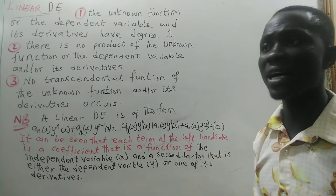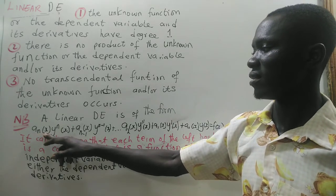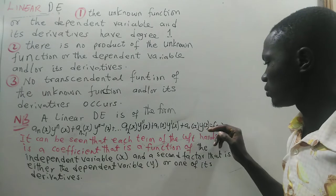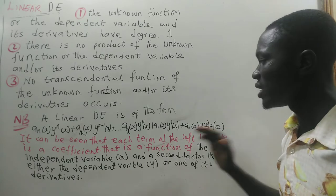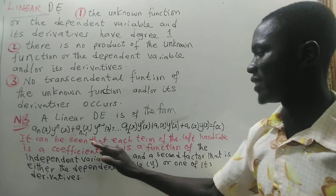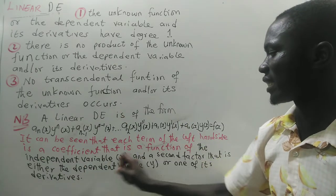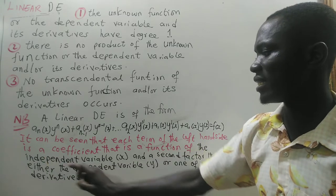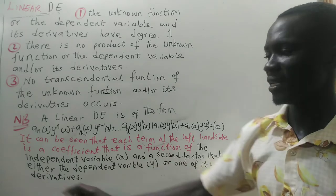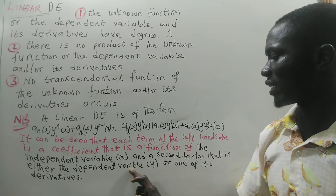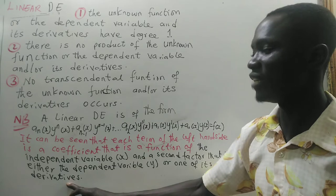Now, the general linear differential equation is of the form a_n(x) y^(n)(x) + ... + a_0(x) y(x) = f(x). If you look at the general form, it can be seen that each term on the left-hand side has a coefficient that is a function of the independent variable x, multiplied by the dependent variable y or one of its derivatives.